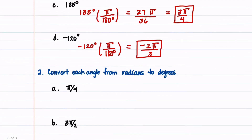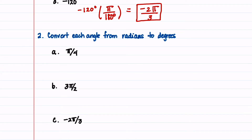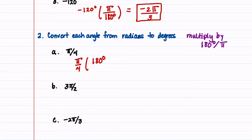For number 2, we're going to convert from radians to degrees by multiplying by 180 degrees divided by pi. Starting with pi over 4: multiply by 180 degrees over pi, the pi's cancel, and we get 180 degrees divided by 4, which is 45 degrees. This makes sense because pi over 4 is halfway between 0 and pi over 2, and we know pi over 2 is 90 degrees.